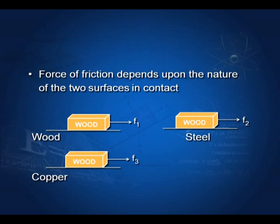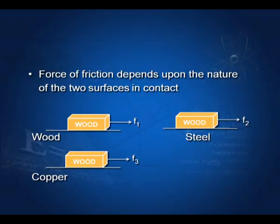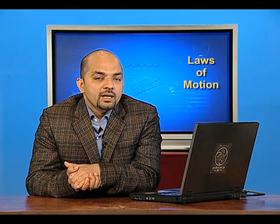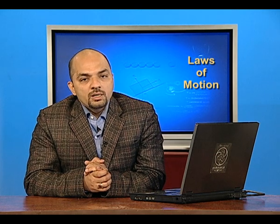Force of friction depends upon the nature of the two surfaces in contact. If the same body is kept on different surfaces, the force of friction is different. A block of wood kept on wood gives friction f1; on steel, f2; on copper, f3. Practically we observe that in all three cases the force of friction is different. This proves that force of friction depends upon the nature of the two surfaces in contact.